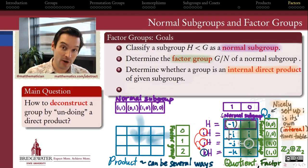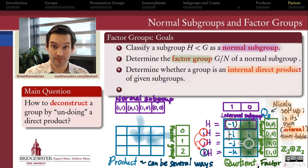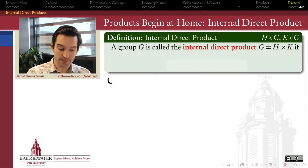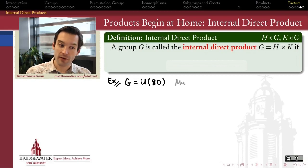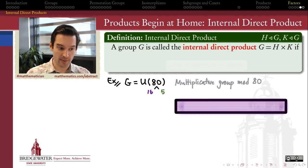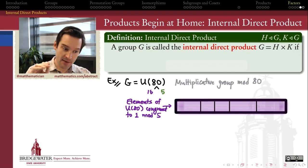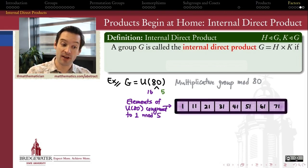In this video, we'll define what it means for a group to be an internal direct product of two of its normal subgroups, and what are some of the implications of that. By way of example, let's think about the multiplicative group of units modulo 80. This group has a fairly large number of elements. To understand its structure, let's take 80 and break it apart into the relatively prime factors 16 and 5.